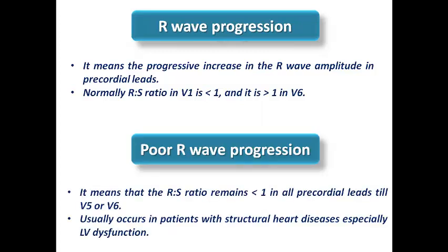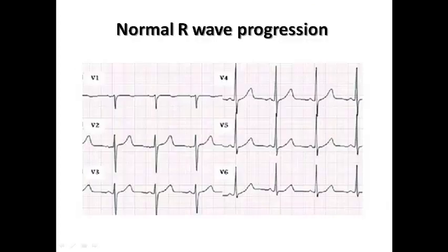We have another phenomenon called poor R-wave progression. The transition zone is delayed in this patient until V5 or V6, meaning the R-S ratio remains less than 1 in all precordial leads until V5 or V6. This usually occurs in patients with structural heart disease. Here we can see an example of normal R-wave progression in which the transition zone is at V4.